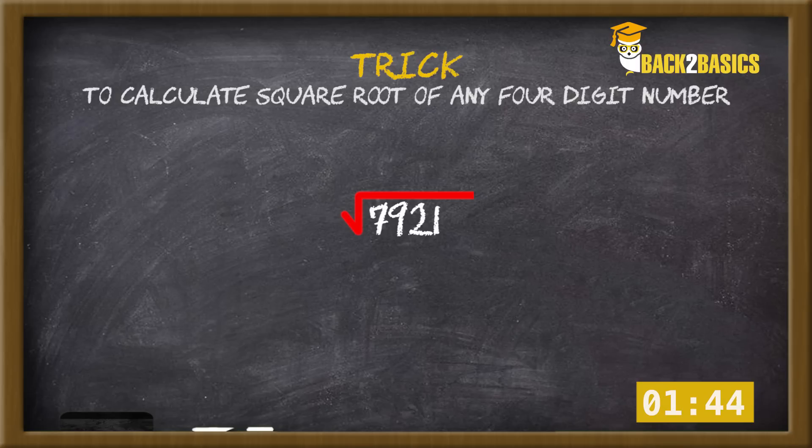Step 1: As we can see, the written number ends with 1. One thing is sure that the square root will end with 1 or 9. Step 2: Delete last 2 digits of our number, so the number left with us is 79.